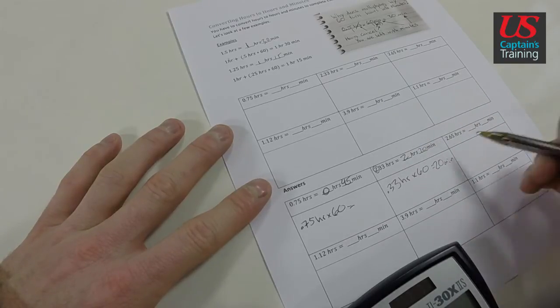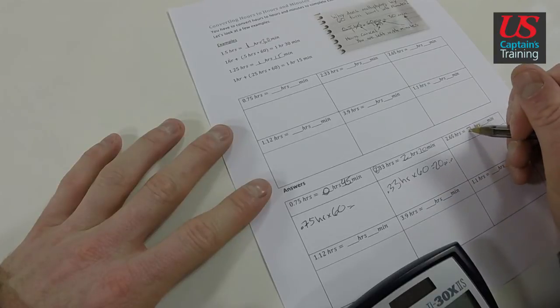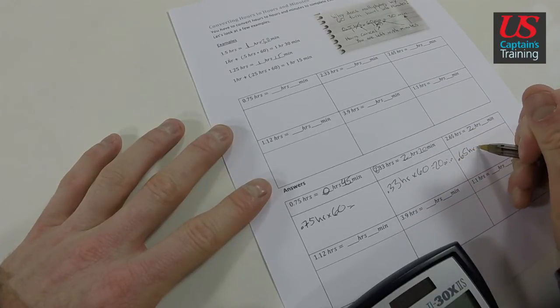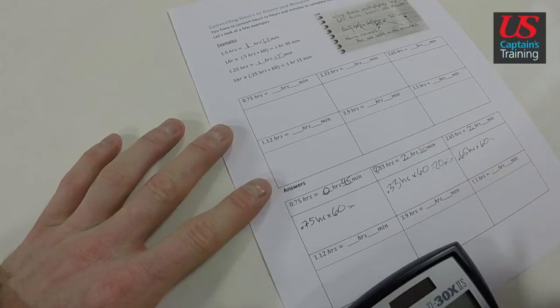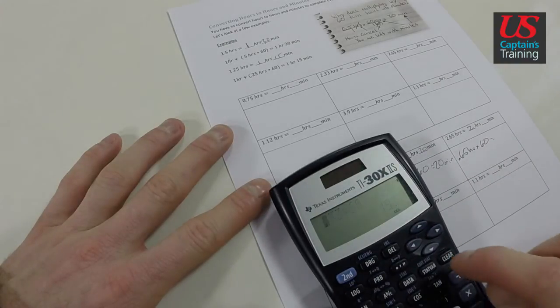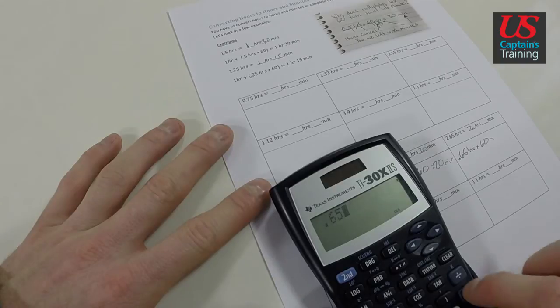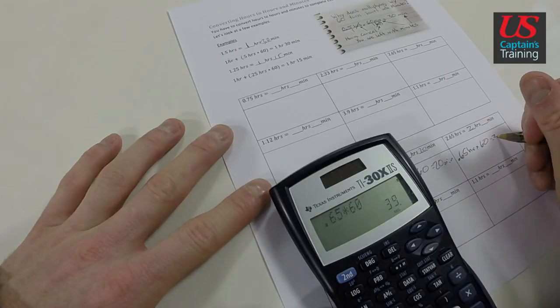And then over here, 2.65 hours. The two goes here. 0.65 hours times 60 equals - and we say 0.65 times 60 equals 39 minutes.